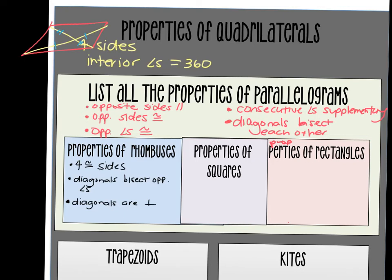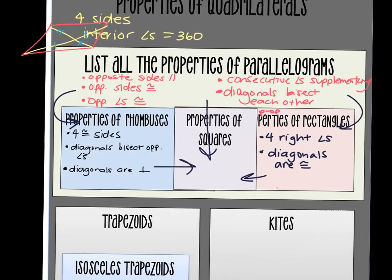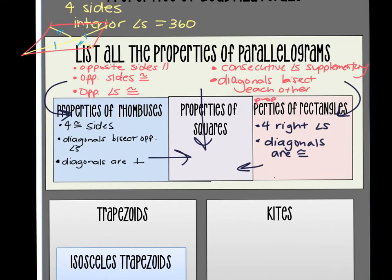Properties of a rectangle: four right angles, and diagonals are congruent. All the parallelogram properties also trickle down into a rectangle. And then a square has all of it — if a rhombus and a rectangle had a baby, it'd be a square. Four congruent sides, four right angles, diagonals that bisect opposite angles, diagonals that are perpendicular, and diagonals that are congruent.